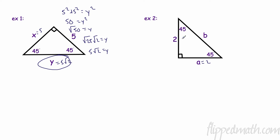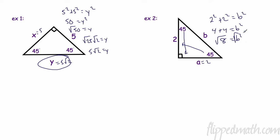So if this leg is 2, then the other leg has to be 2 because it's an isosceles triangle. Then a² + b² = c²: 4 + 4 = 8, so b² = 8. Take the square root: that's √4 × √2, which equals 2√2.